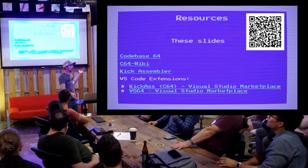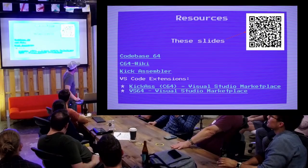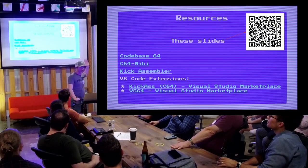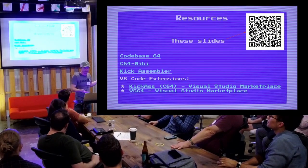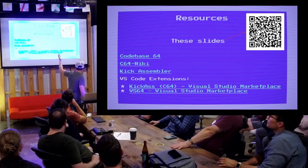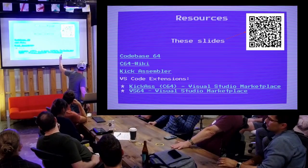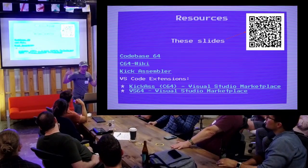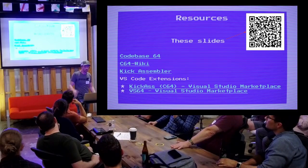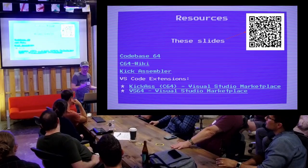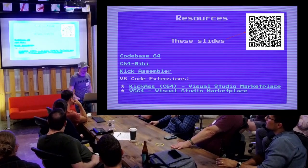If you're interested in learning Commodore 64 assembly, there's a QR code you can scan — that's just a link to these slides, which has links to resources, the extensions I use, as well as the Code B64 repository, which has pre-written algorithms for things like multiplication and division. It's been super helpful for me. That's it — thanks, everyone.